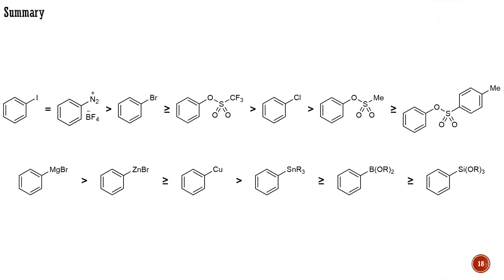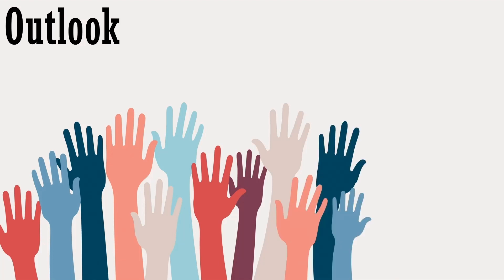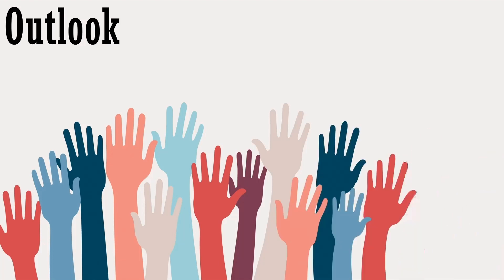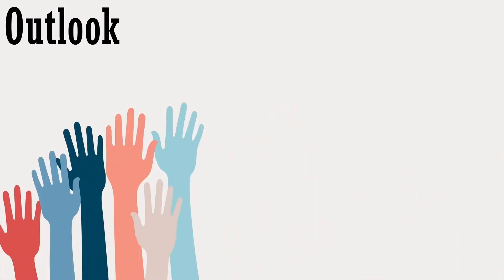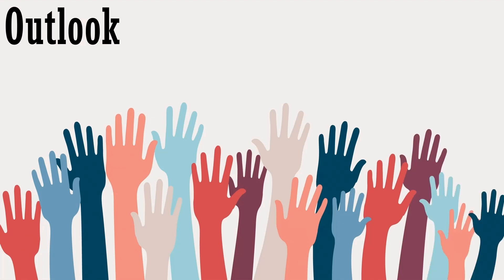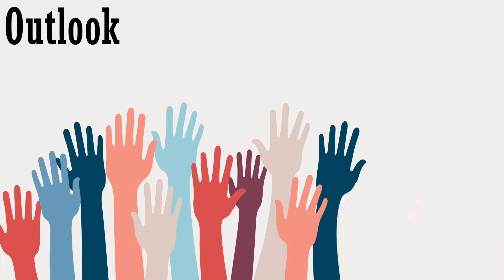To sum it up, in this lecture we learned the factors controlling the reactivity of electrophilic and nucleophilic coupling partners used in cross-coupling reactions. We have estimated the reactivity of common substrates based on their stereoelectronic properties. In the end, you saw how the rational selection of the catalytic system can influence the couplings involving unreactive substrates. With the knowledge gained here about the reactivity of coupling partners, we can move forward to discuss issues regarding the selectivity in cross-couplings. In the following lecture, you will learn about the factors controlling the regio- and chemoselectivity of cross-couplings involving multifunctionalized substrates. Thank you for your attention.